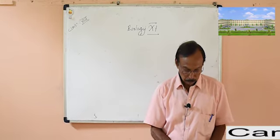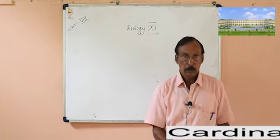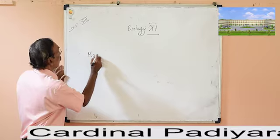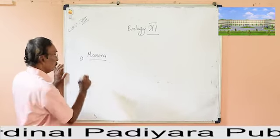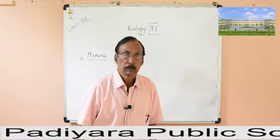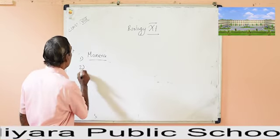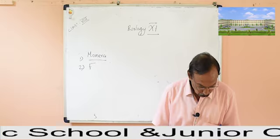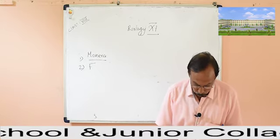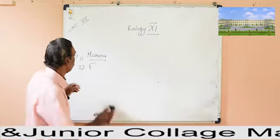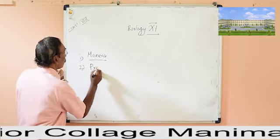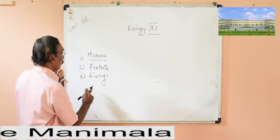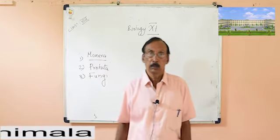We are discussing the five kingdom classification. The first kingdom is Monera, the bacteria group, which we already finished. The second kingdom is Protista, which we also finished. The third group is Fungi, which we are going to discuss today. The fourth is the plant kingdom and the fifth is the animal kingdom.